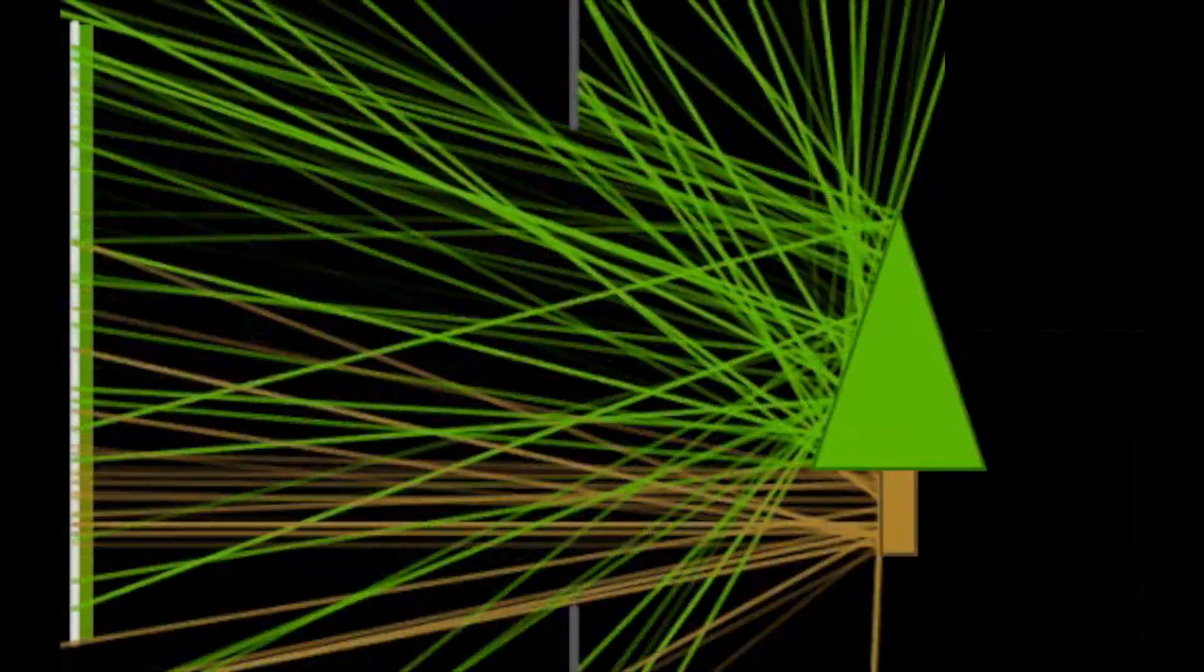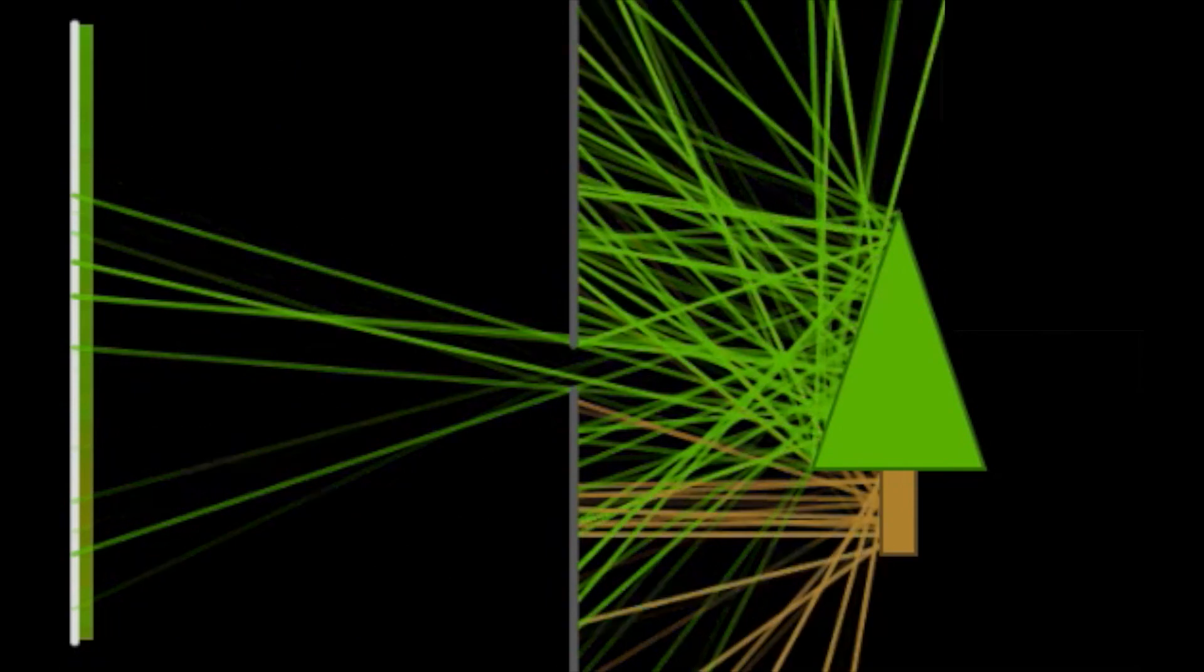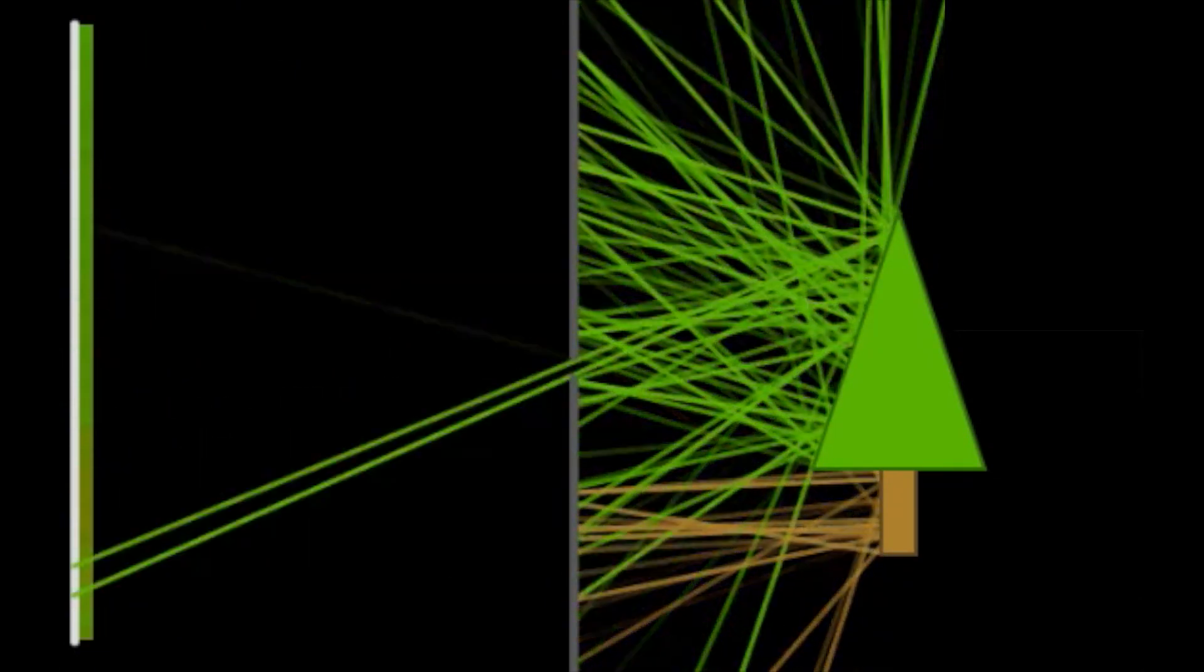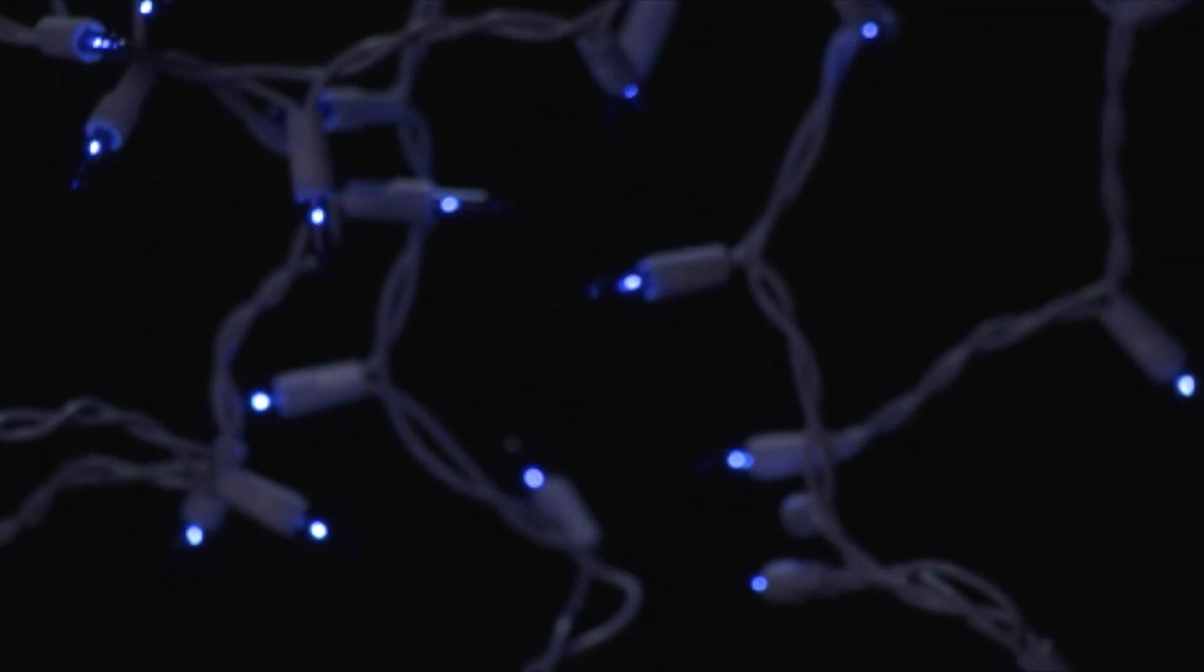In the last lesson, we explored the geometric behavior of cameras. We saw how light bounces off objects, passes through a small hole or aperture, and hits an image plane. One of the important concepts we covered was depth of field, which is a region where objects appear in focus. Outside that region, objects appear blurry.